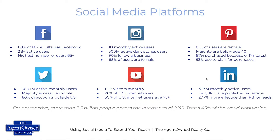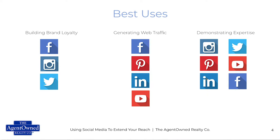For perspective, more than 3.5 billion people have access to the internet as of 2019 — that's 45% of the world population. So you have a huge audience you can reach. Looking at the best uses for social media, I've divided them into three categories. For building brand loyalty — where you present consistent valuable content and people trust and follow you — Facebook, Instagram, and Twitter are great. For generating web traffic, Facebook, Pinterest, LinkedIn, and YouTube are all effective.